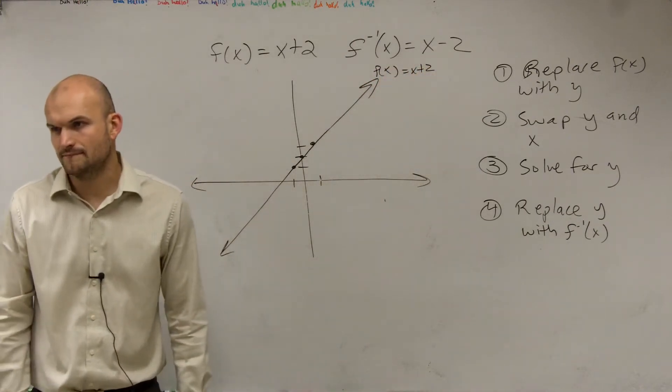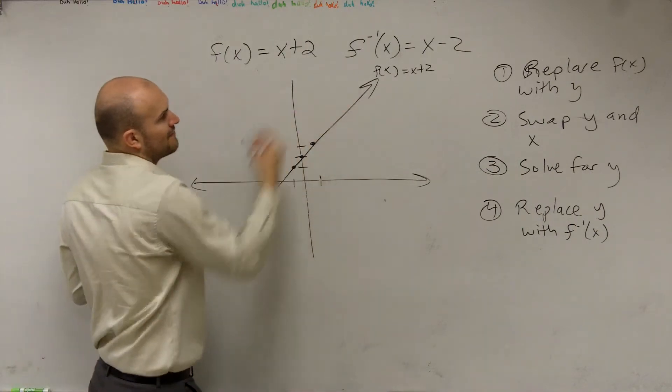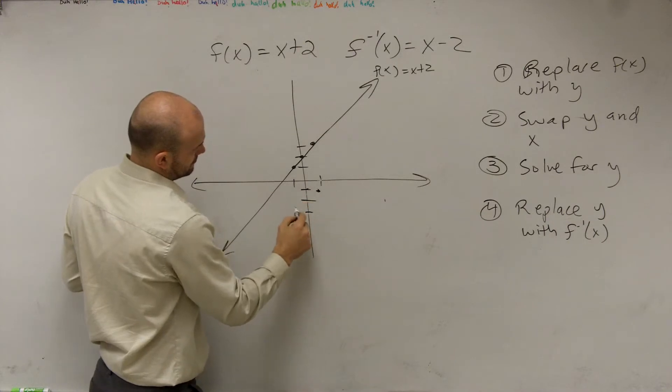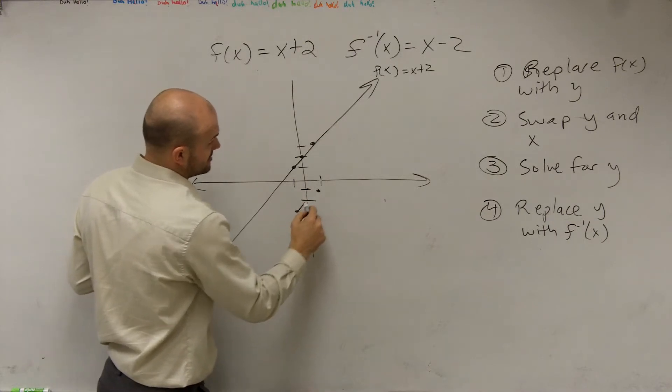Does everybody see that? Let's graph f inverse of x. That's at negative 2. Parallel lines, you're right.